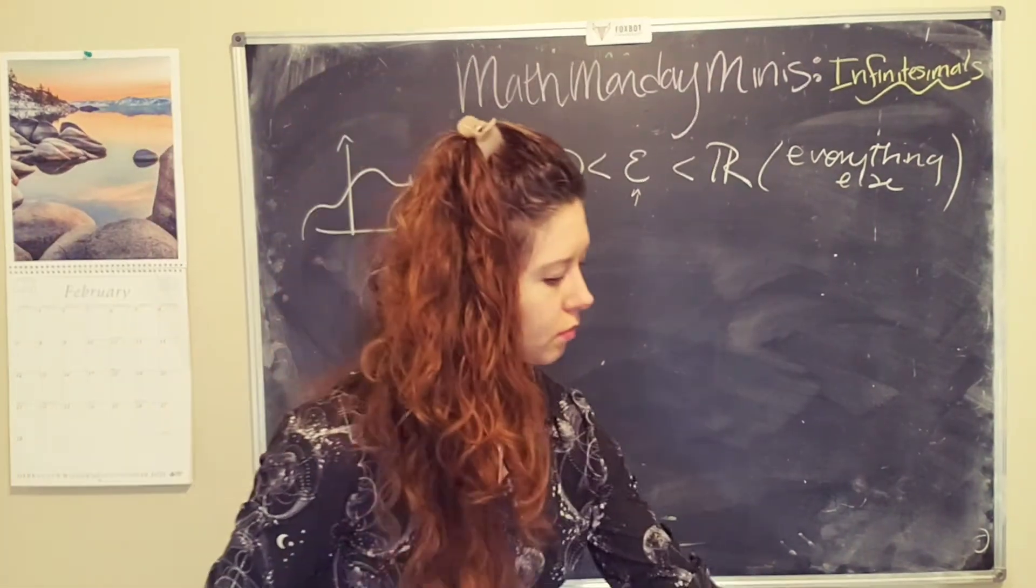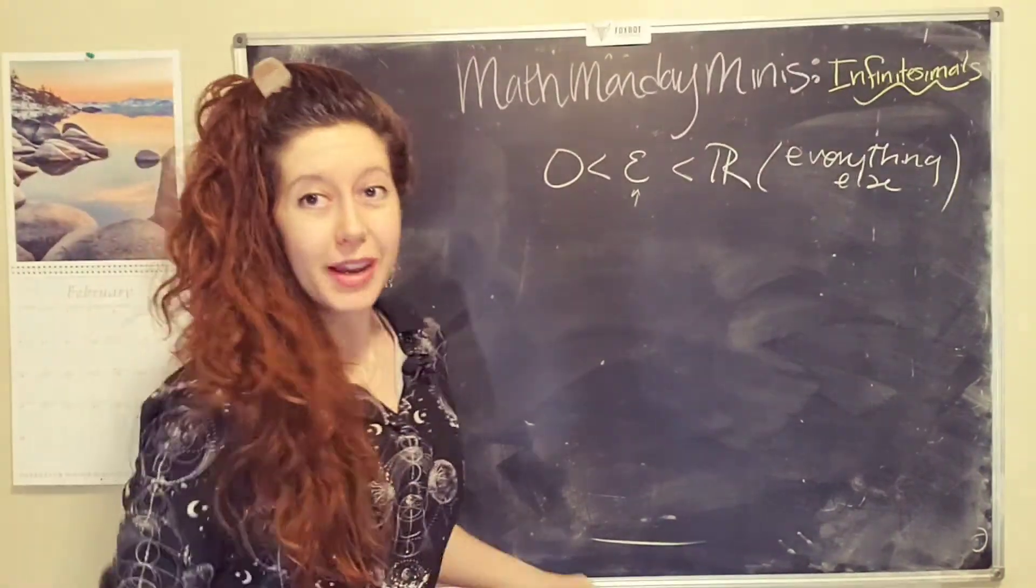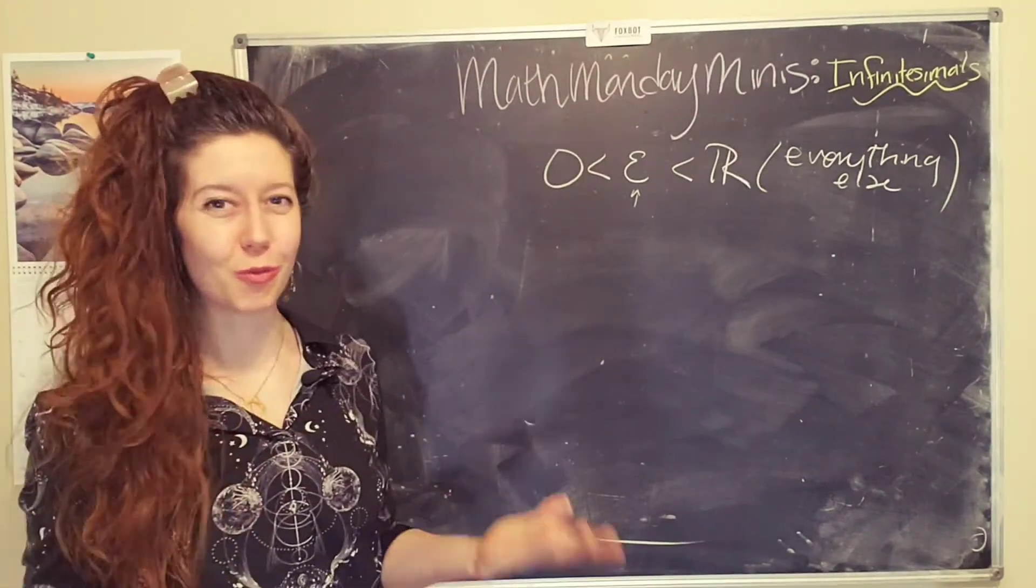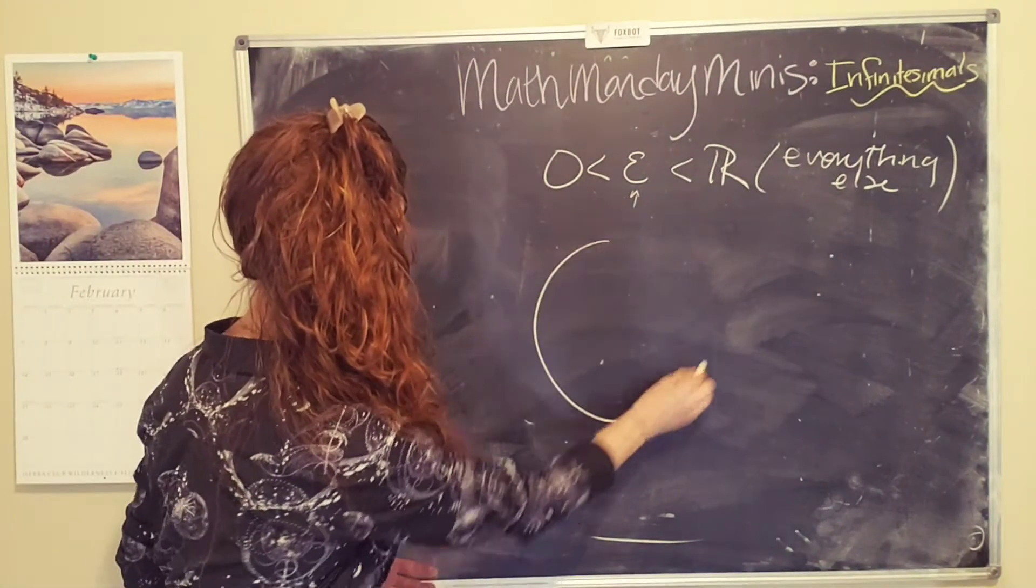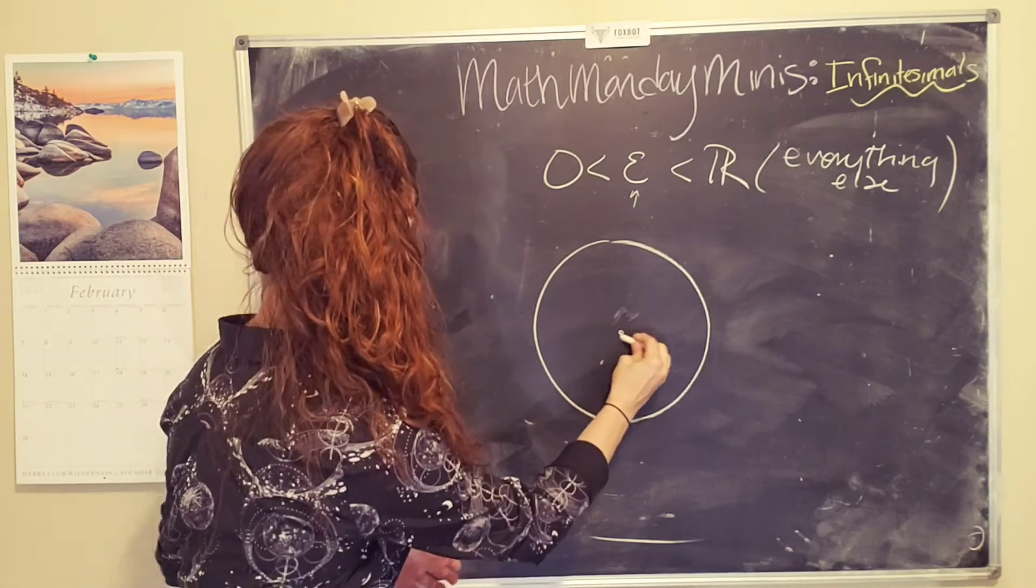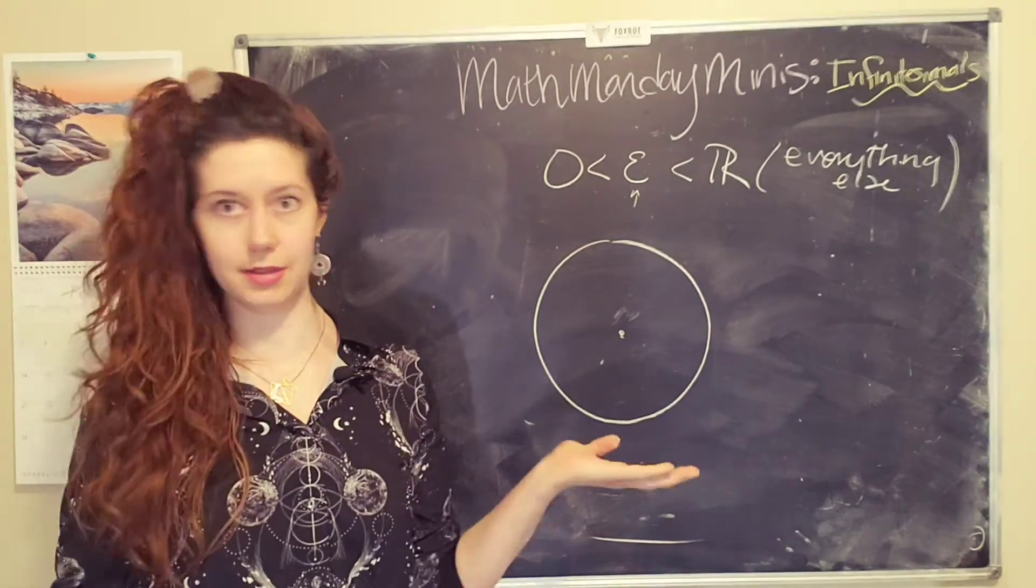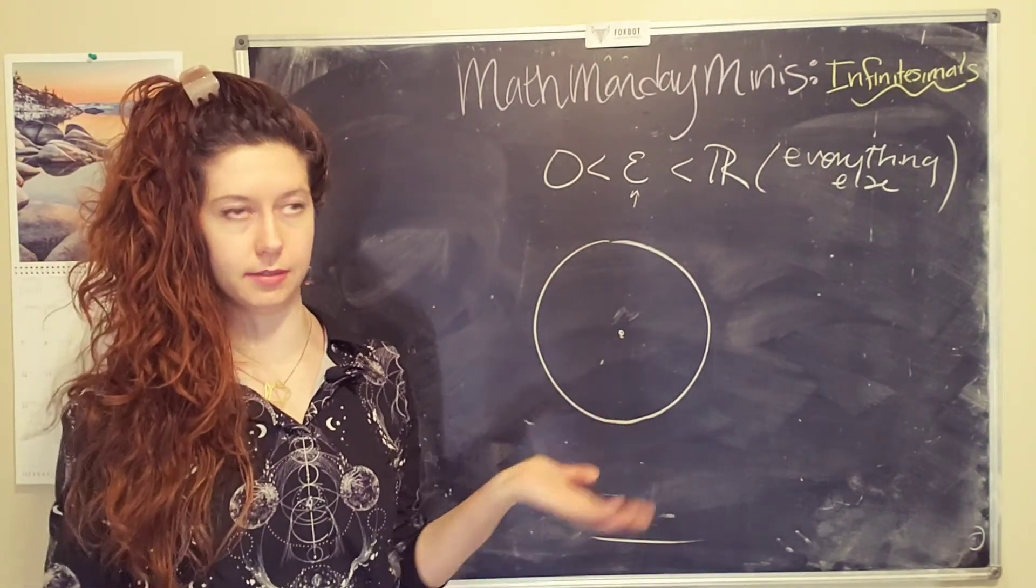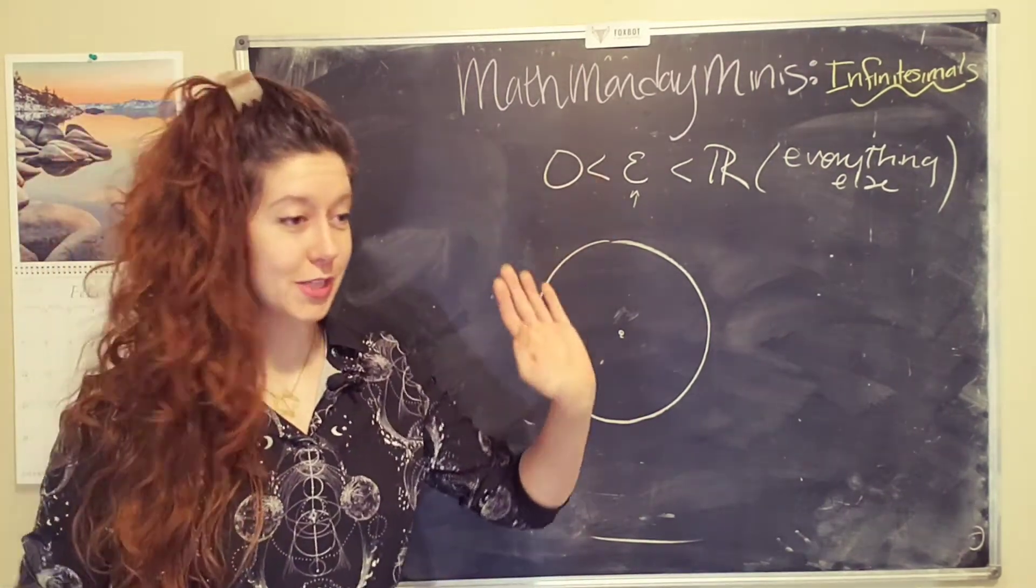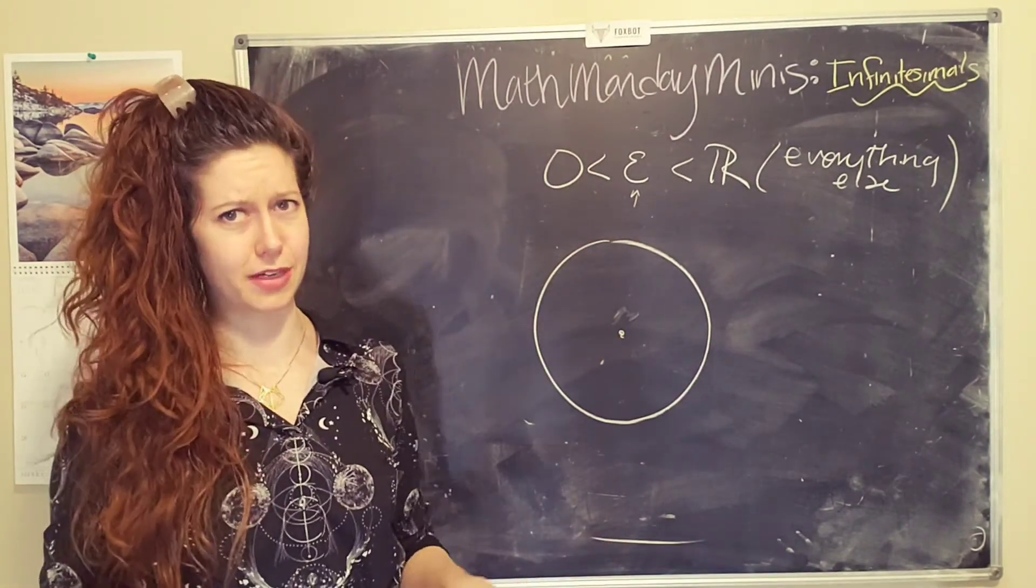So let's use a more familiar example to understand what infinitesimals mean, and how we actually use them to solve problems. So let's look at a circle. Let's say I'm an ancient Greek philosopher, and I'm like, what is the area of a circle? We don't know. This is a really weird and surprisingly hard problem. We figured out squares and rectangles and triangles, no problem. But circles are funky.